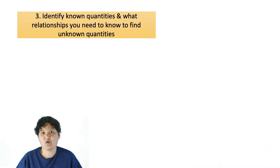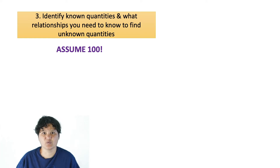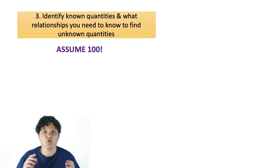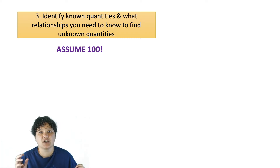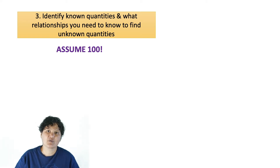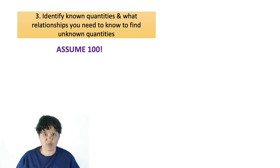So back to the third step — how do you know how to get from what you know to what you need to know? First of all, you're usually going to have to assume a certain amount of something, and I like to assume 100. For example, if you know mass percent, it might be useful to assume 100 grams. If you know the molarity of a solution, you might want to assume 100 milliliters. Basically, you're going to pick 100 convenient units, and you'll see examples of this as I work the sample problems.